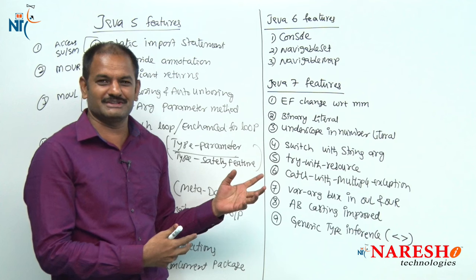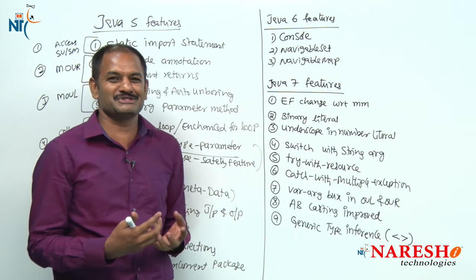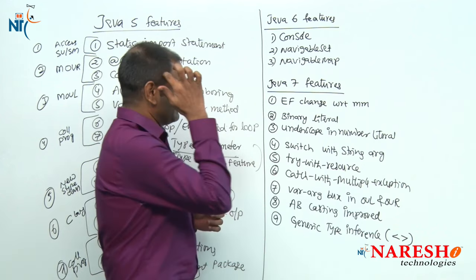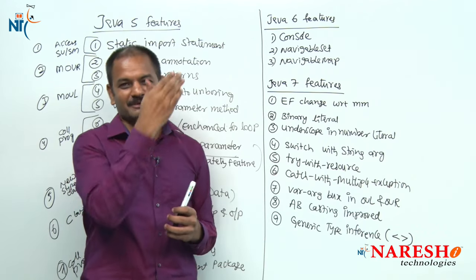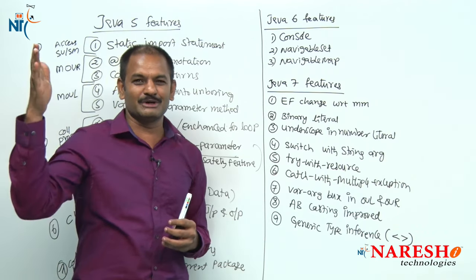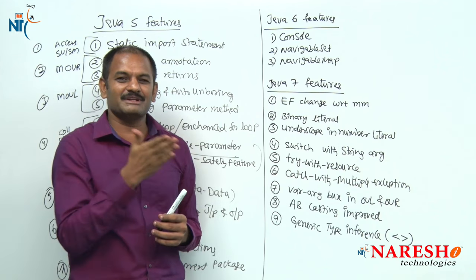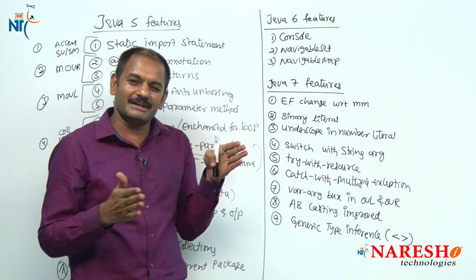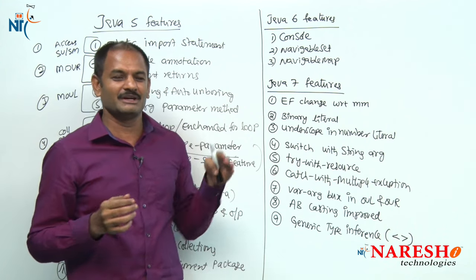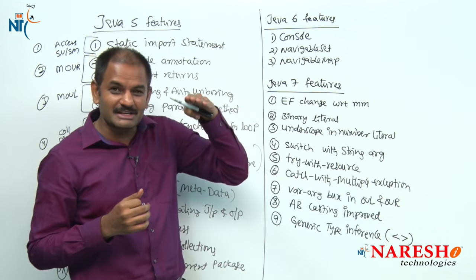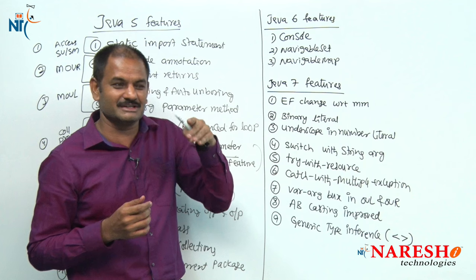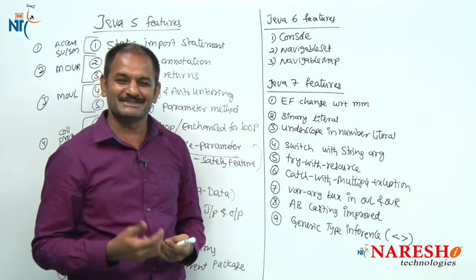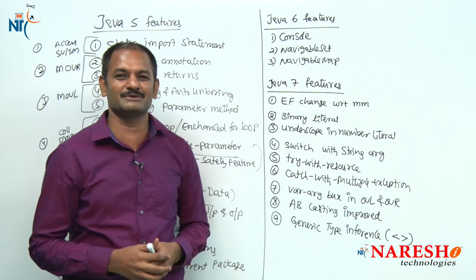How do I remember all these Java 7 features? I follow a simple technique: I remember all the core Java chapter headings, from basics up to collections. For every chapter, I know what changes exist. For example, the first chapter is about Java program execution flow — that is the main method change. The second chapter is data types — two changes there. Then operators and control flow statements — switch, try-catch all come under control flow. Then methods — varargs is method-related. And finally generics.